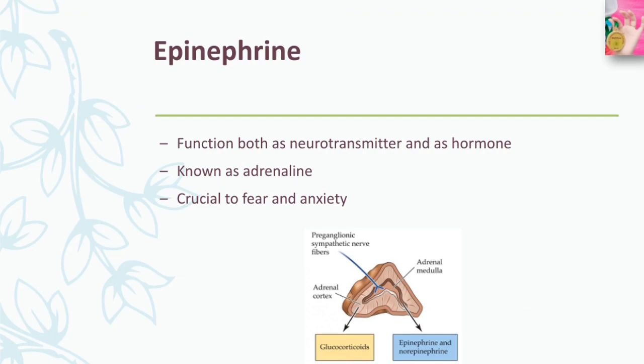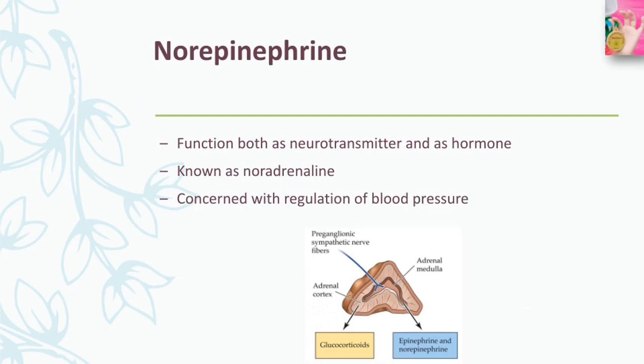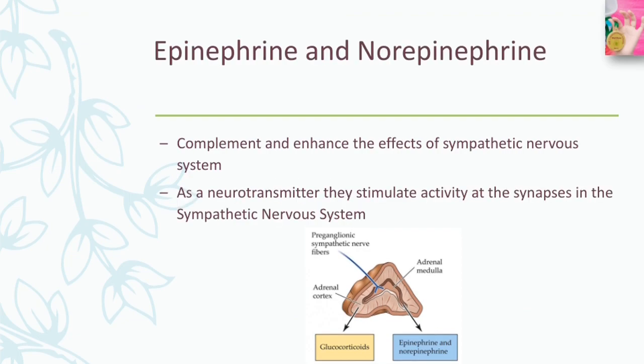Apart from their role in stressful situations, epinephrine is crucial to the experience of fear and anxiety, while norepinephrine is concerned with the regulation of blood pressure. As they circulate through the bloodstream to the heart and other target organs, epinephrine and norepinephrine complement and enhance the effects of the sympathetic nervous system. These hormones also act as neurotransmitters, stimulating activity at synapses in the sympathetic nervous system.